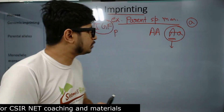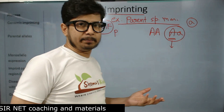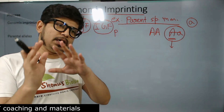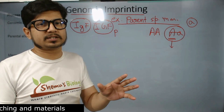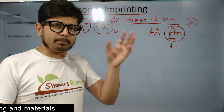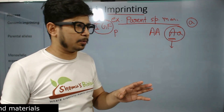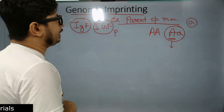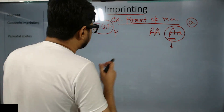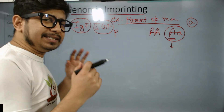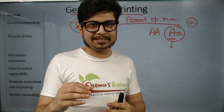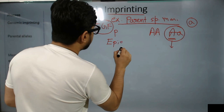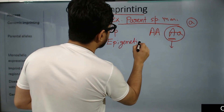It will be maternally imprinted. So there are two types of imprinting: paternal imprinting and maternal imprinting. Paternal imprinting means the specific gene is expressed from the father's origin, not from the mother's. Maternal imprinting means it is expressed from the mother's origin, not from the father's. This imprinting pattern is regulated by epigenetic modification.